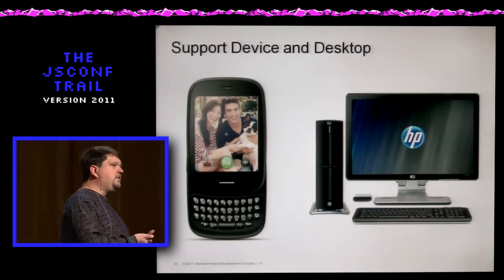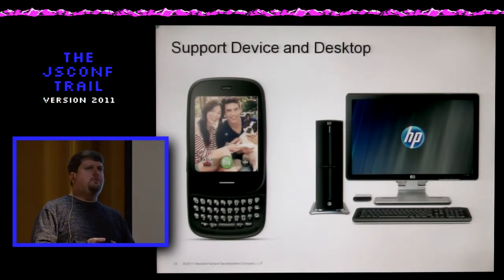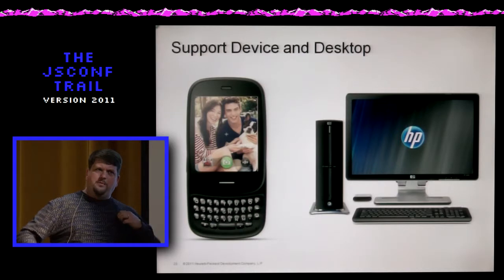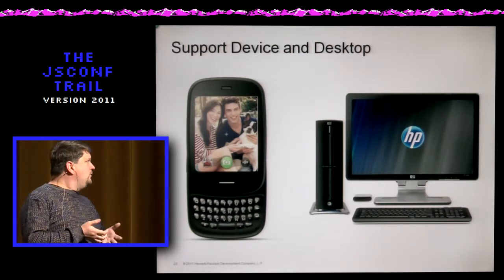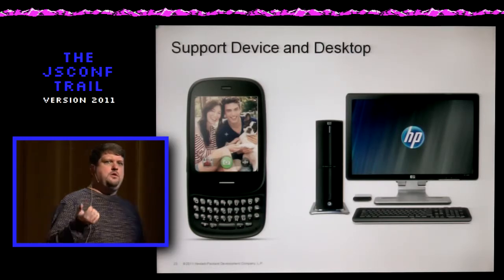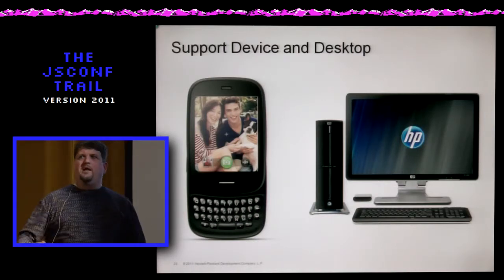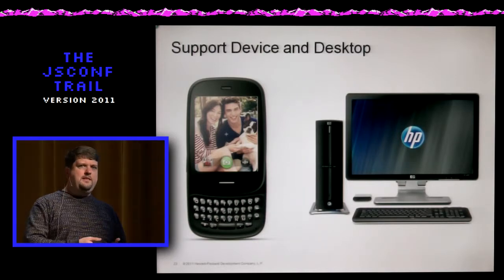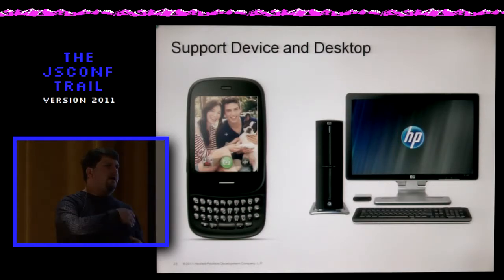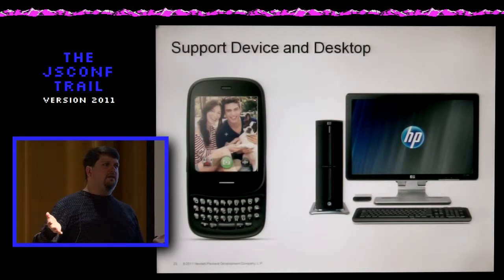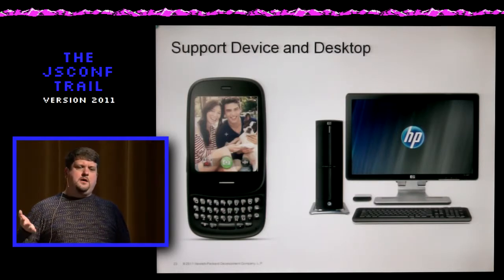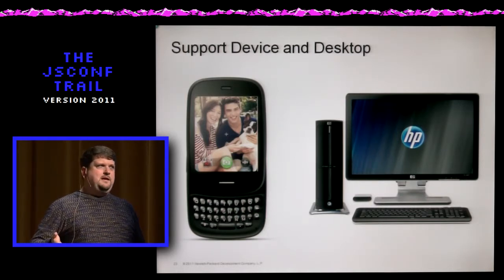Another value of the Enyo framework is supporting devices and also supporting the desktop. Mojo pretty much was only usable on device — you could run an emulator or try it in Safari or Chrome, but it didn't work great. With Enyo, we designed it originally in Chrome and Safari, then pushed it to the device. The idea was that you can build your application as much as possible on the desktop and then push it to device. On the desktop you have great debugging tools, profiling tools, network monitoring, and then when you get it to the device, things should work the same way.